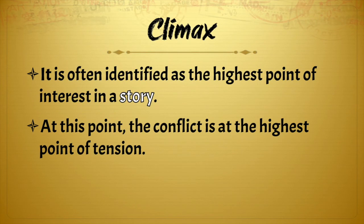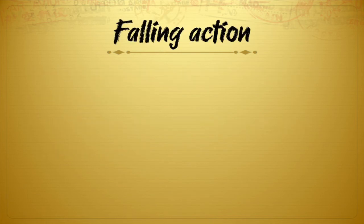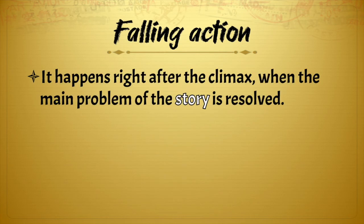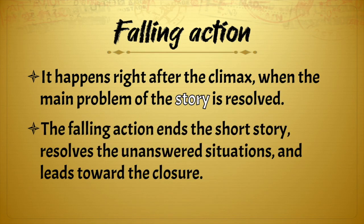The climax is often identified as the highest point of interest in a story — the point at which the conflict reaches its highest level of tension. The falling action happens right after the climax, when the main problem of the story begins to be resolved. The falling action ends the short story, resolves unanswered situations, and leads toward closure.